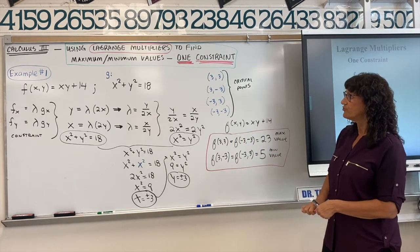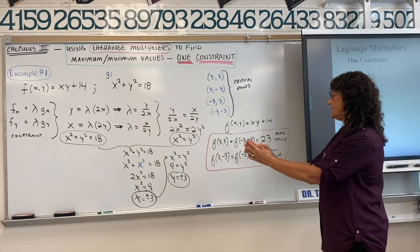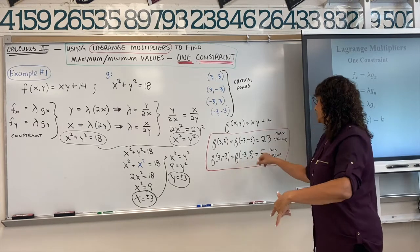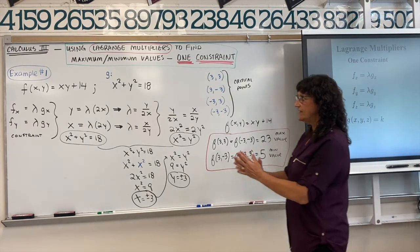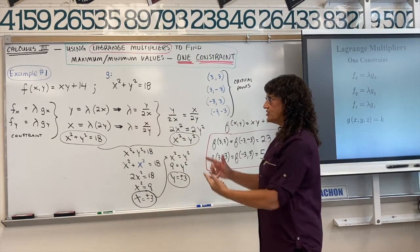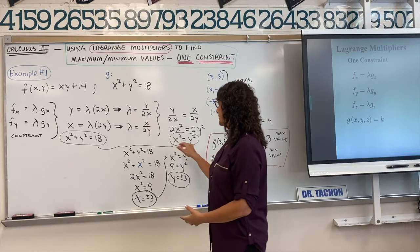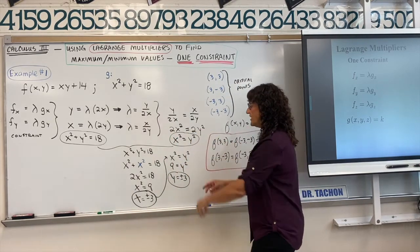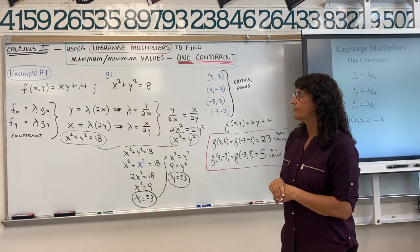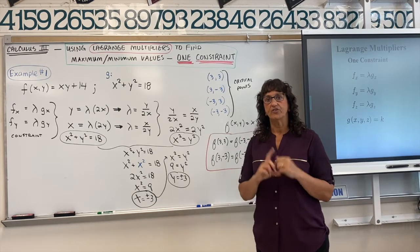For this surface, given the constraint x squared plus y squared equals 18, the maximum value of 23 is located at (3, 3) or (-3, -3), and the minimum value is 5. Lambda is introduced to help build the system of equations and get the relationship between x and y so you can find your critical numbers.